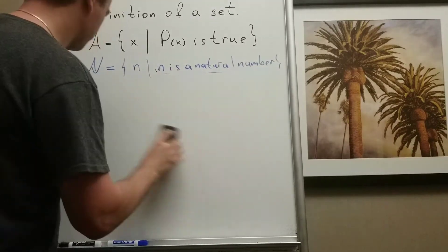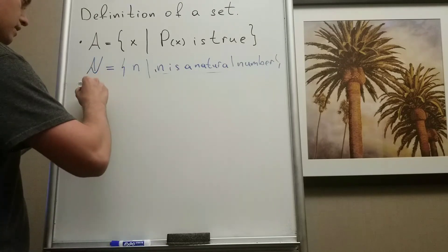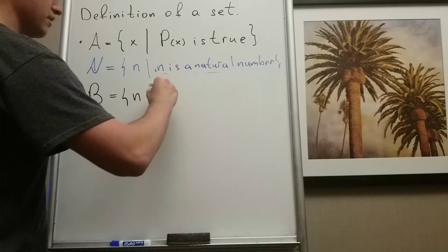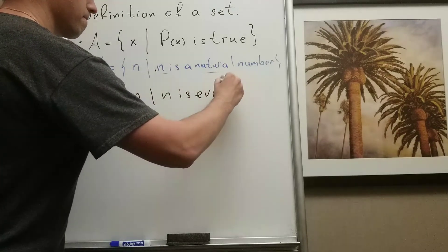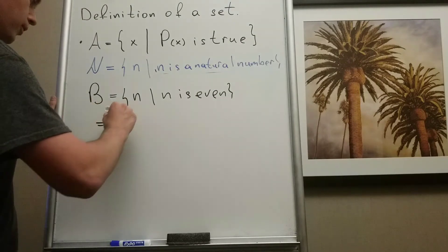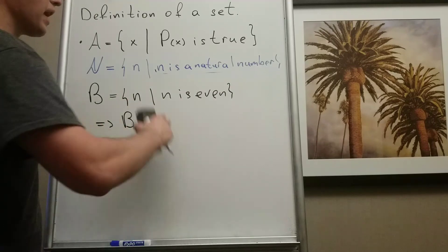Set B, where B has such element N that N is even. And you can easily check that from here follows that B is equal to... oh no, N is even.